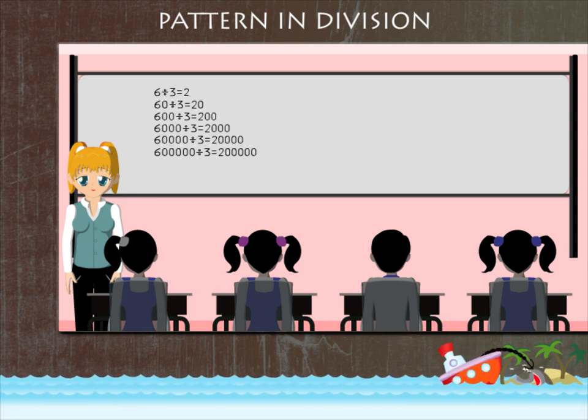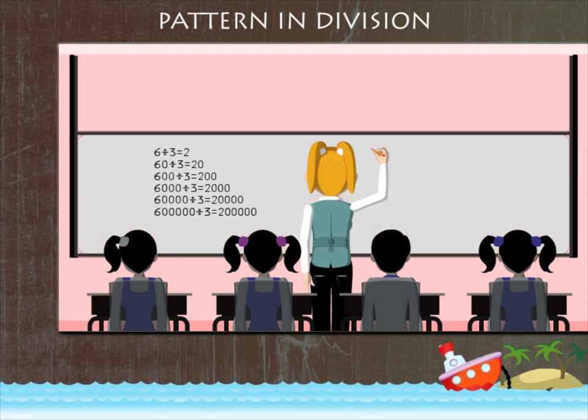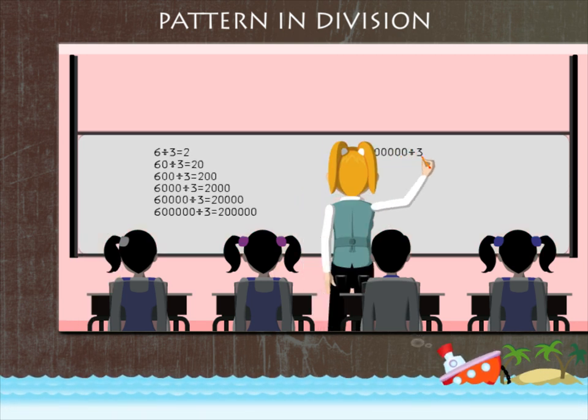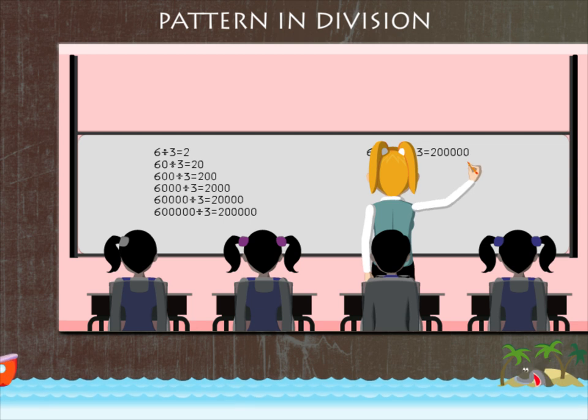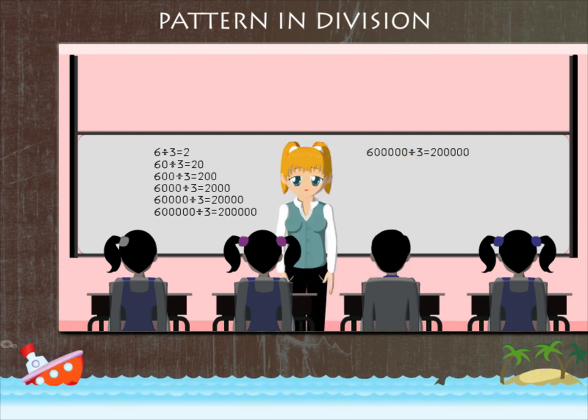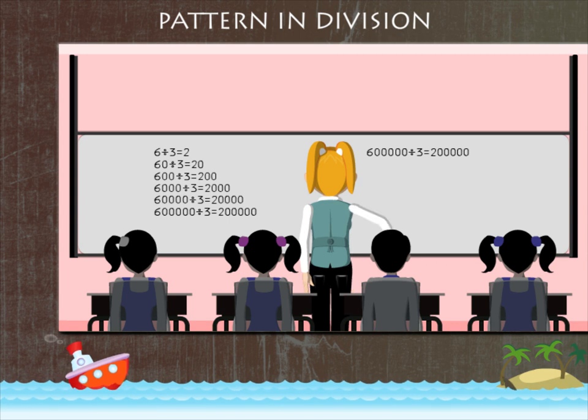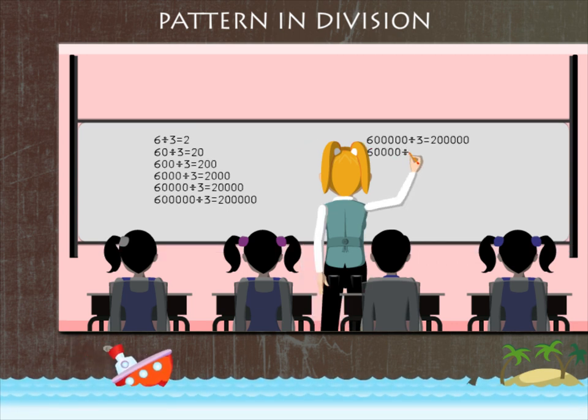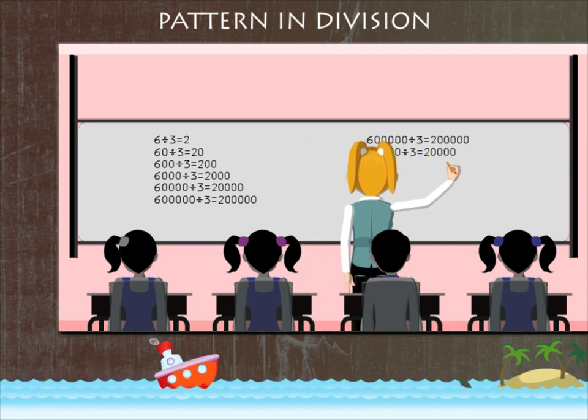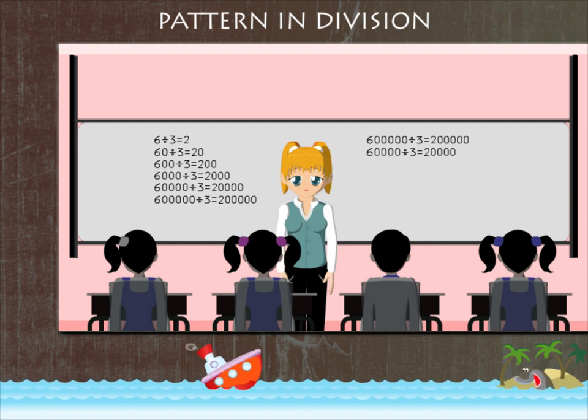She begins by 600,000 divided by 3 is equal to 200,000. She asks the class 60,000 divided by 3 is equal to 20,000. In the same way,